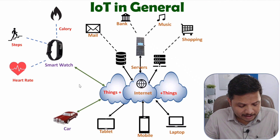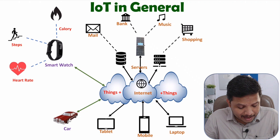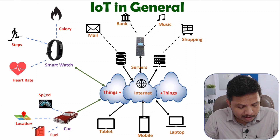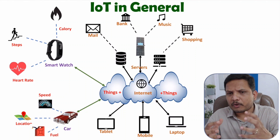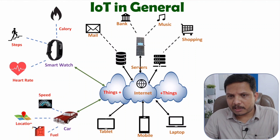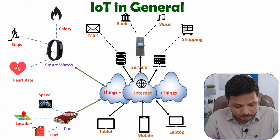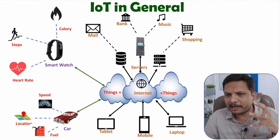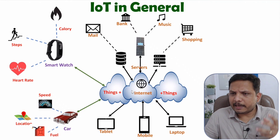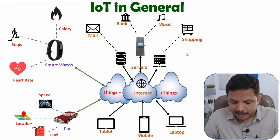Another example is a car. If you add some sensors to a car then you can monitor the speed of the car, the location of the car, and how much fuel is there. So without going inside the car you can have all those data with the use of IoT — sensors will be measuring all this data and it gets uploaded on internet so the user can access it from anywhere.